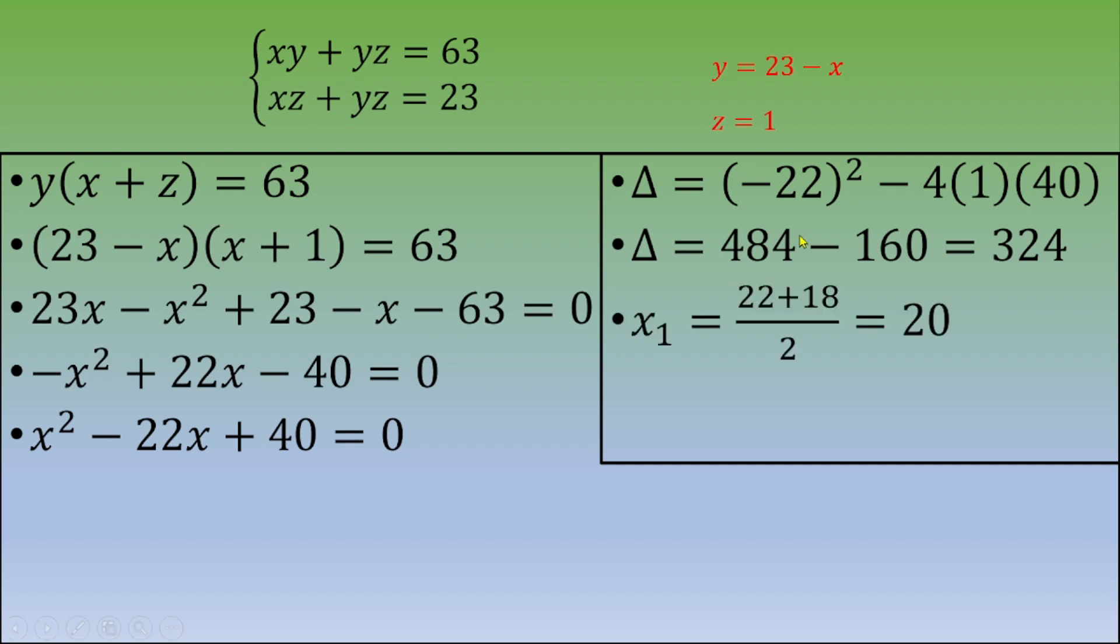So root number one. This is 22 plus 18 over 2. And this is 40 divided by 2. And this is 20. And the second root is 22 minus 18 over 2. And this is 4 divided by 2. And you end up with 2.